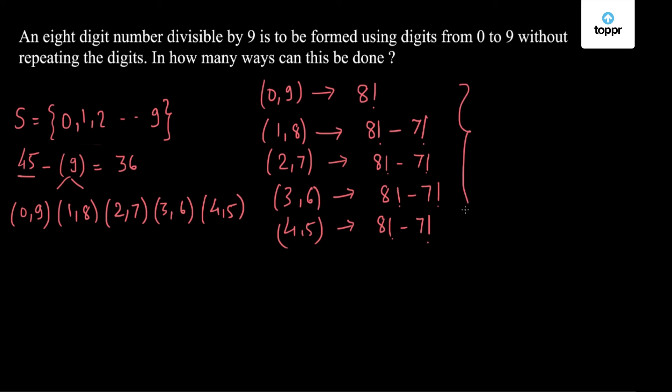So I have to just sum up these. I have 8 factorial plus 4 times (8 factorial minus 7 factorial). So I have 5 times 8 factorial minus 4 times 7 factorial. This is nothing but 5 into 8, 40 times 7 factorial minus 4 times 7 factorial, which is equal to 36 times 7 factorial.